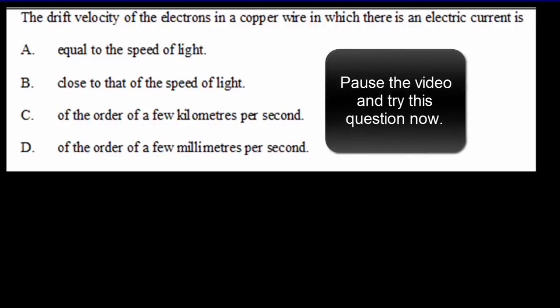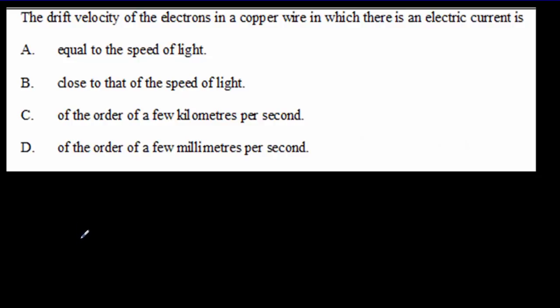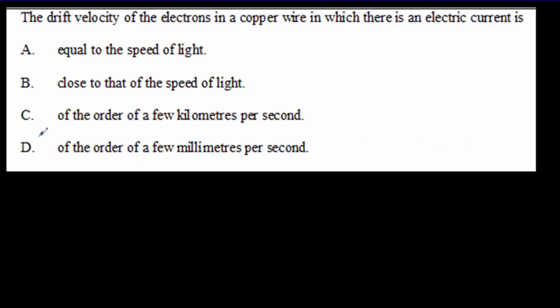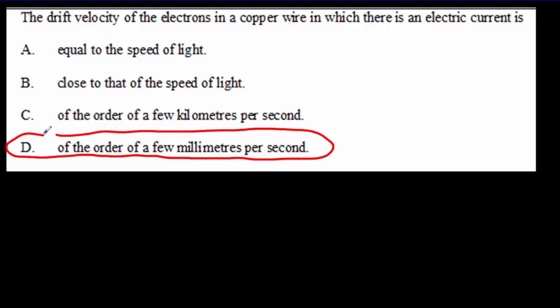Let's see if you're listening — a quick IB question. Read it over and try it out before coming back for the answer. The drift velocity is of the order of a few millimeters per second. The correct answer is D.